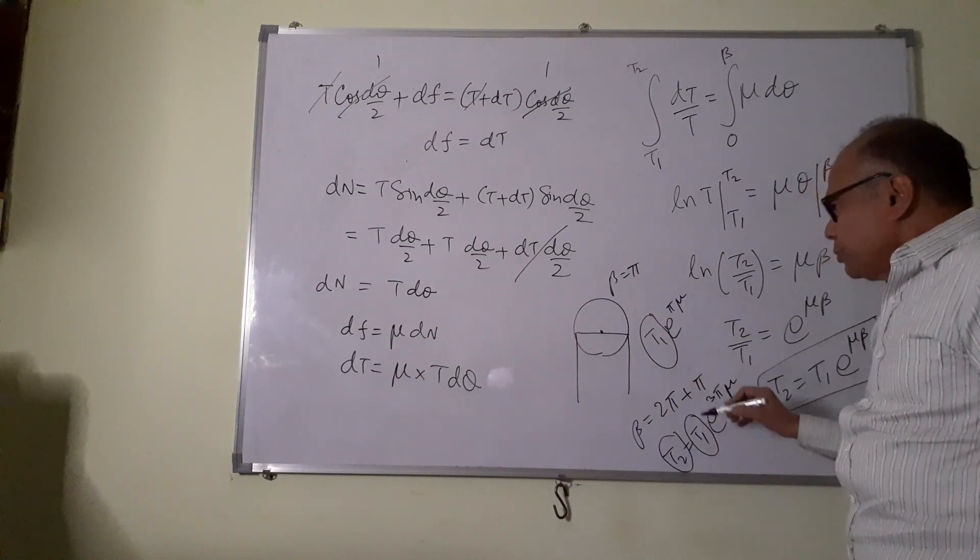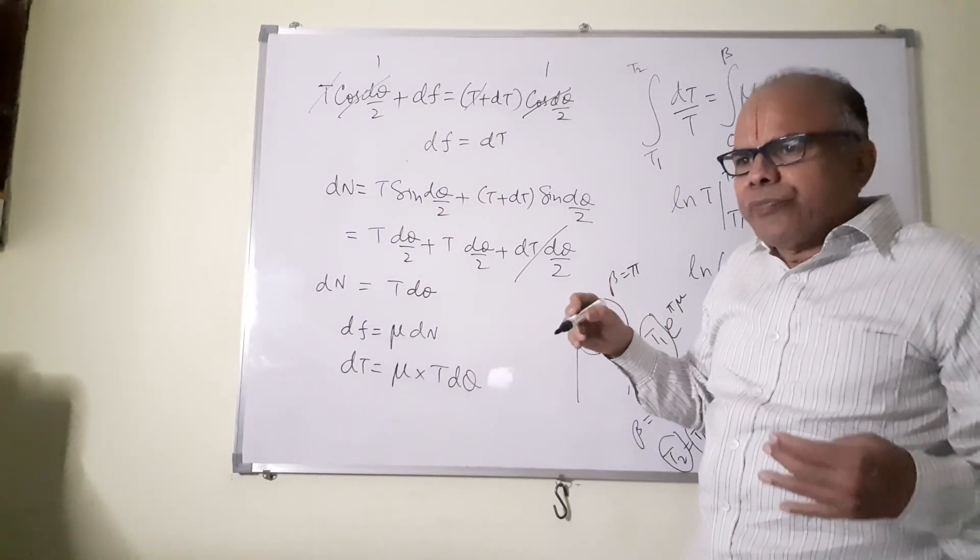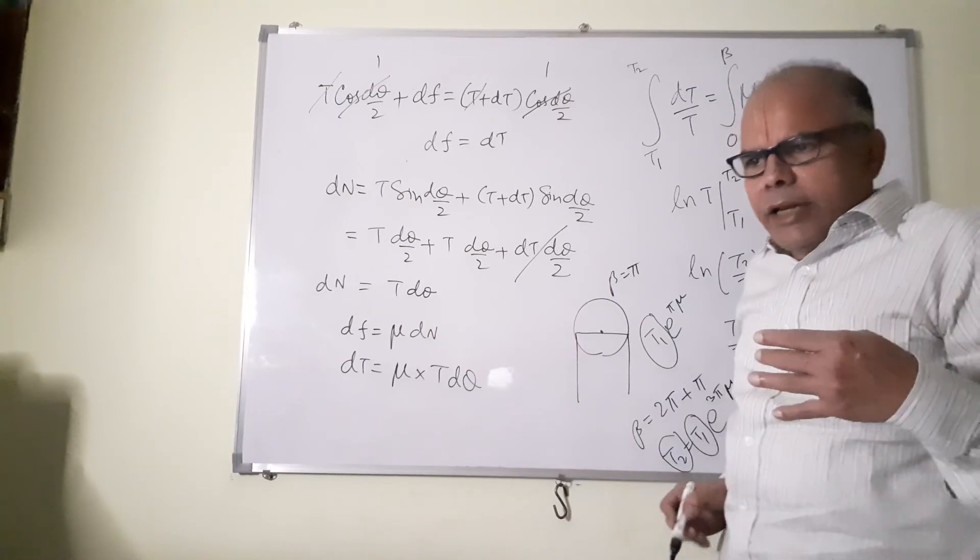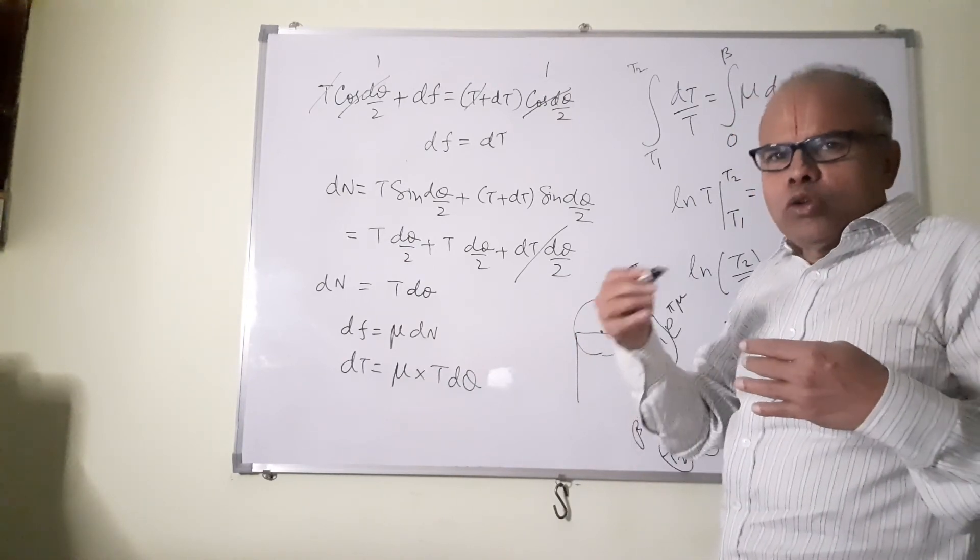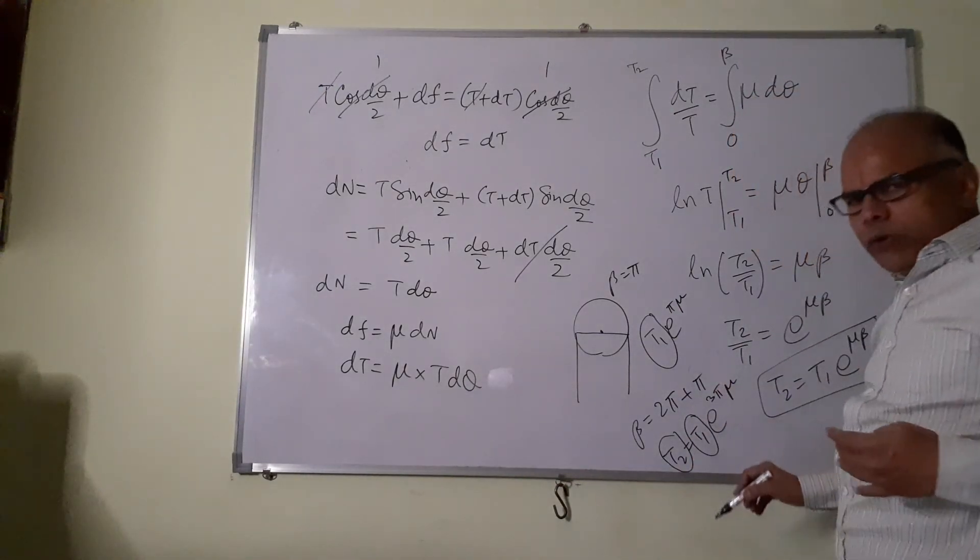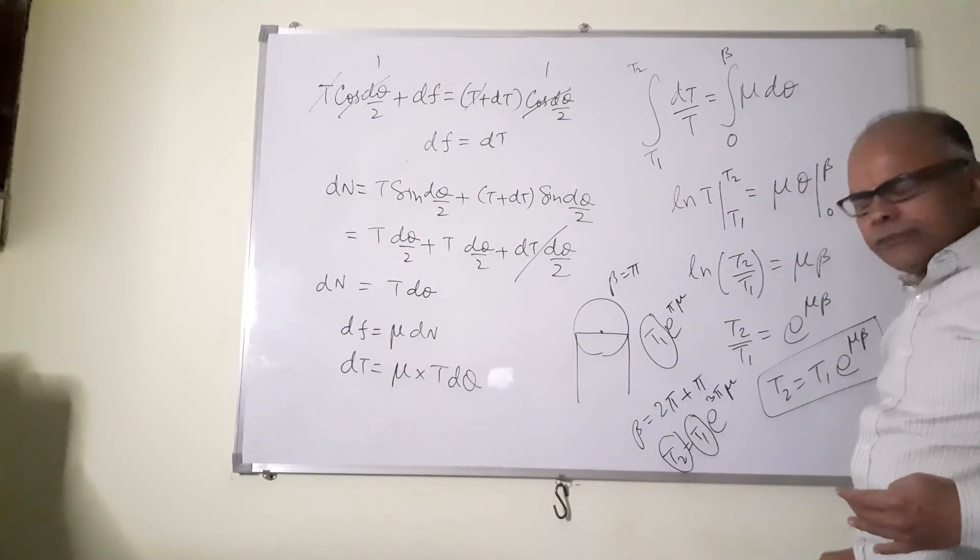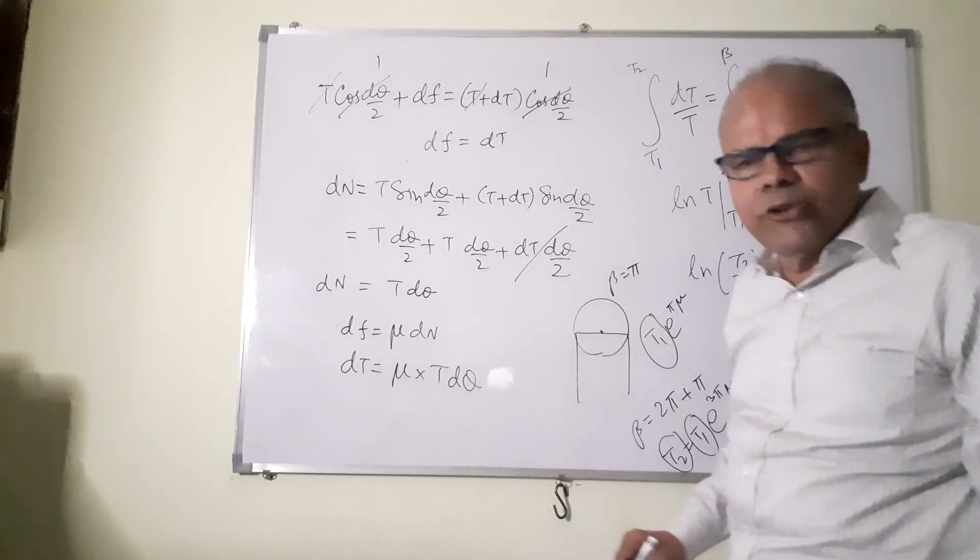So that is why you find that in cranes you must have seen, there is a capstan and on the capstan the wire which is there goes round, two rounds, three rounds. So for every round there is a 2 pi added. So less effort, the same effort for more load. Thank you.